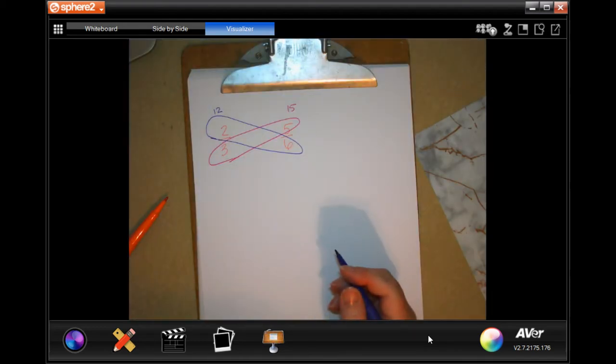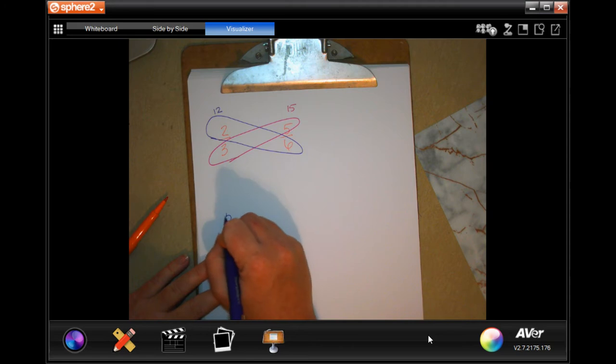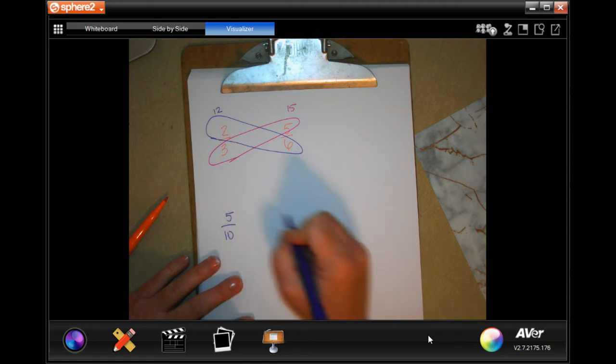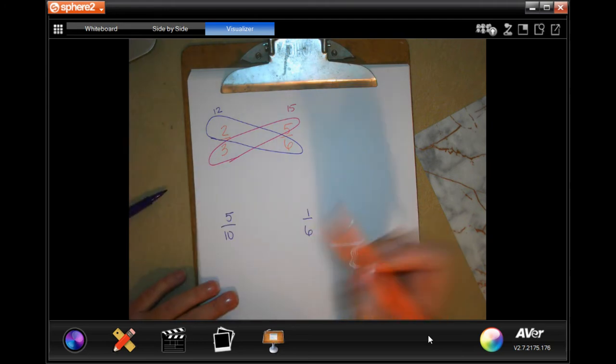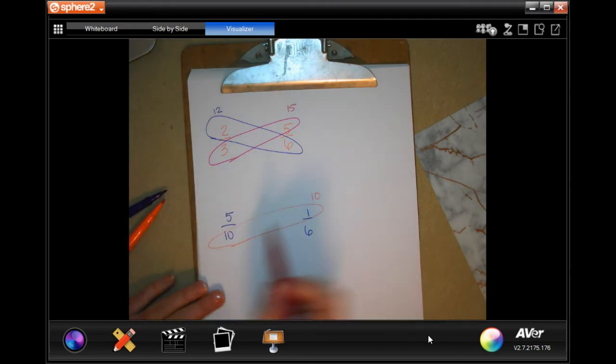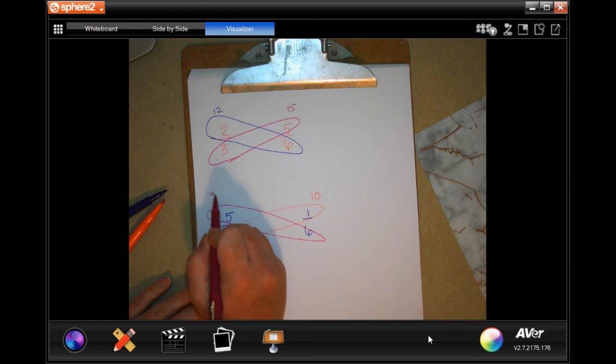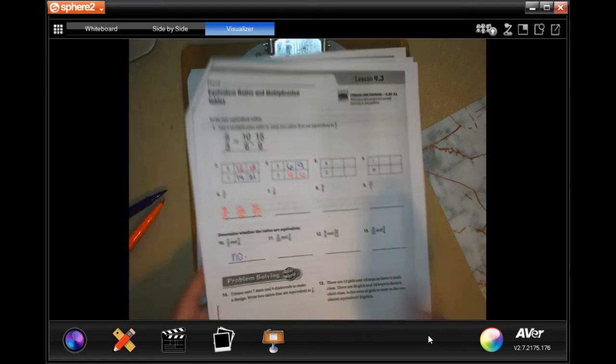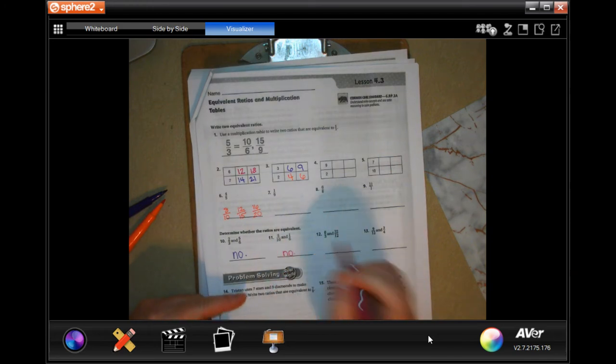All right, so we're going to do the next one. The next one says 5 tenths and 1 sixths. So your answer is no. 10 and 30, not even a little bit the same.